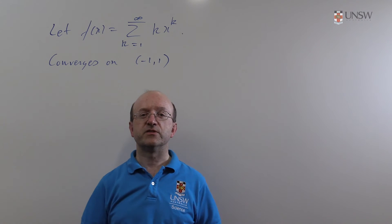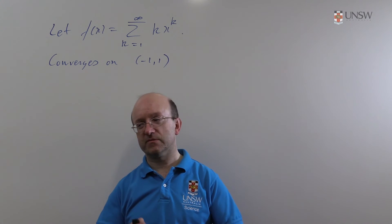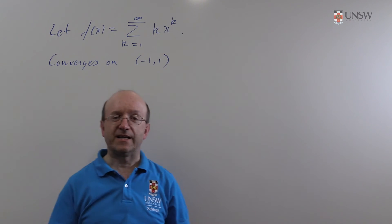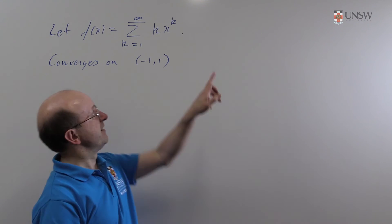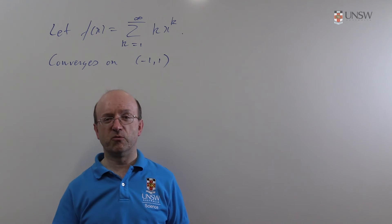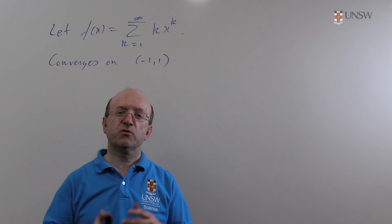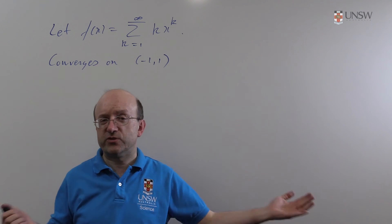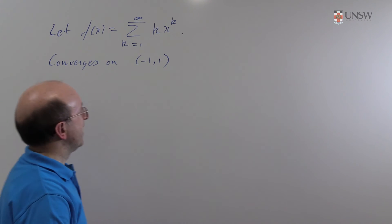Can we find something a bit more understandable, something we can actually deal with? Well, in this case we can. The series itself looks a lot like the geometric progression — if the k weren't there it would just be sigma x to the k, which we know is just a geometric series, 1 over 1 minus x. Something similar can be done here, because what we're going to be relying on is the fact that if you take a power series you can differentiate term by term. You can treat power series as if they're infinitely long polynomials. As long as you don't divide by 0, more or less everything works.